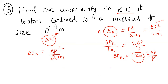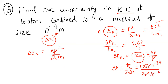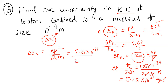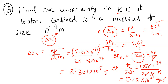From Heisenberg's principle: Δp = ℏ/(2·Δx) = 1.05 × 10⁻³⁴ / (2 × 10⁻¹⁴) = 5.25 × 10⁻²¹ kg·m/s. Substituting into ΔEK = (Δp)²/(2m): (5.25 × 10⁻²¹)² divided by 2 × 1.67 × 10⁻²⁷, which gives approximately 8.301 × 10⁻¹⁵ J.